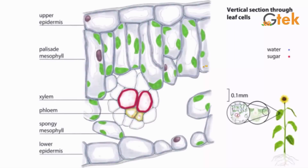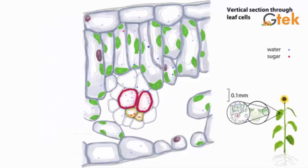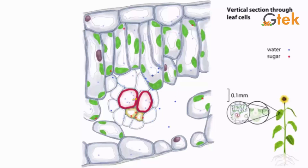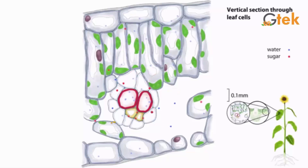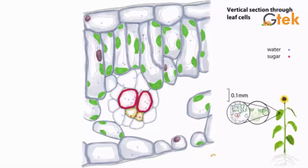Let us see about the vertical section through leaf cells. It contains xylem and phloem — you can see phloem and xylem here. In phloem, the sugar molecule is transferred. In xylem, the water molecule is transferred. Here also the sugar and water molecules are transferred.